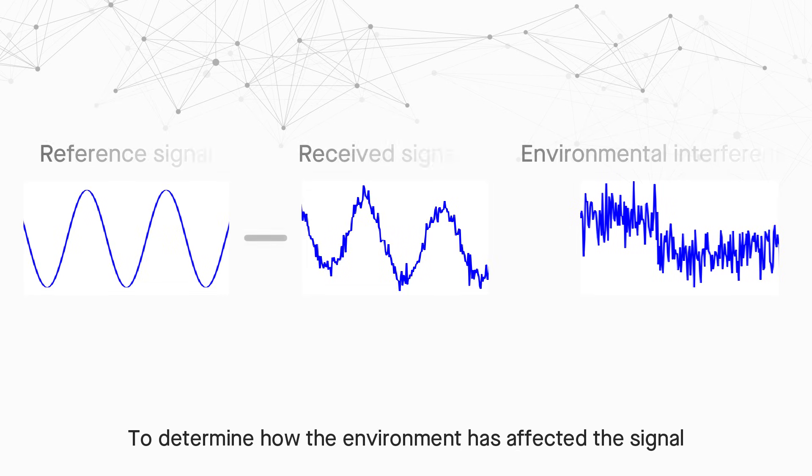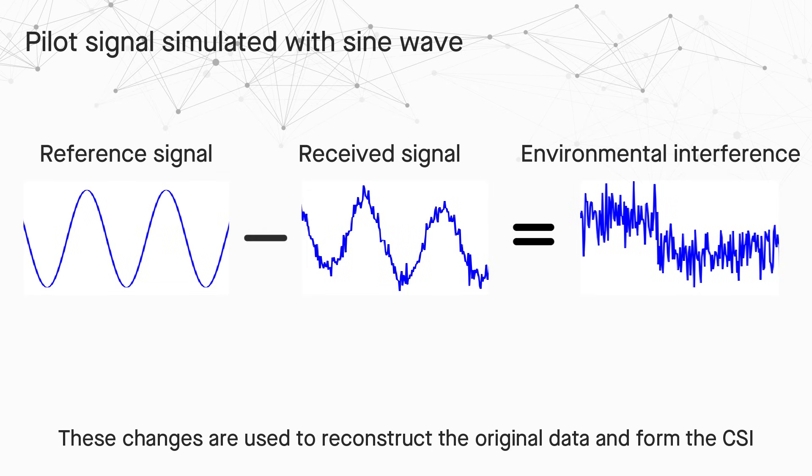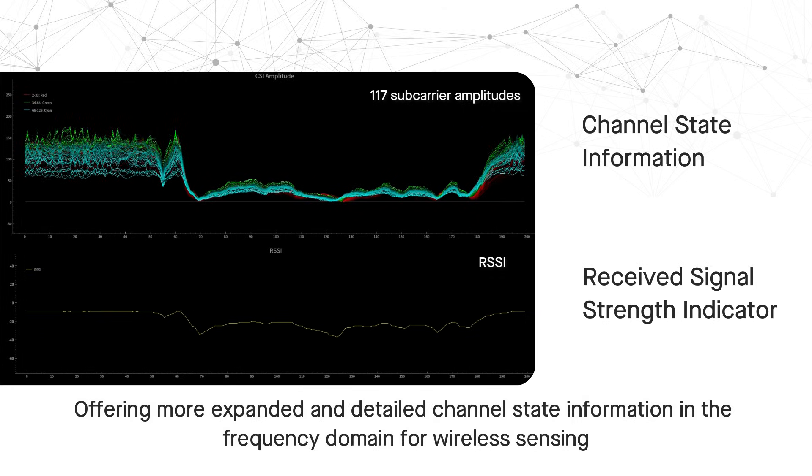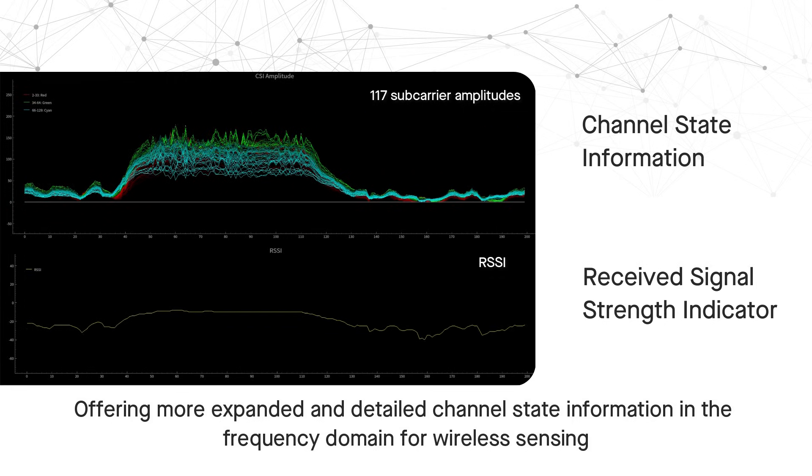These changes are used to reconstruct the original data and form the CSI. CSI can be seen as an enhanced version of signal strength information, offering more expanded and detailed channel state information in the frequency domain for wireless sensing.